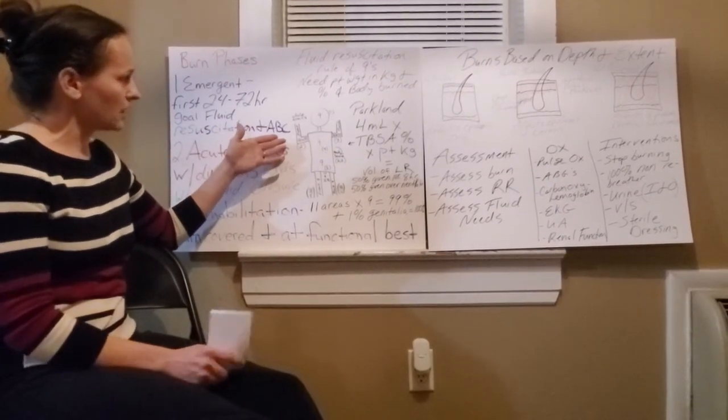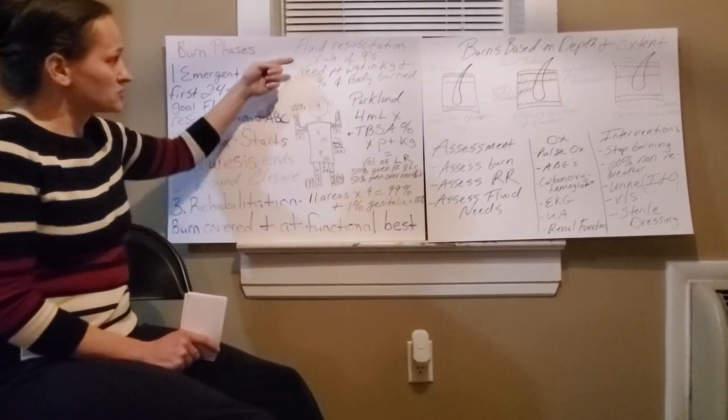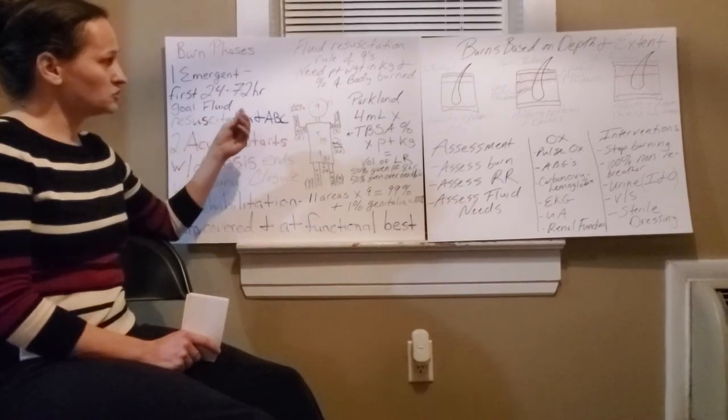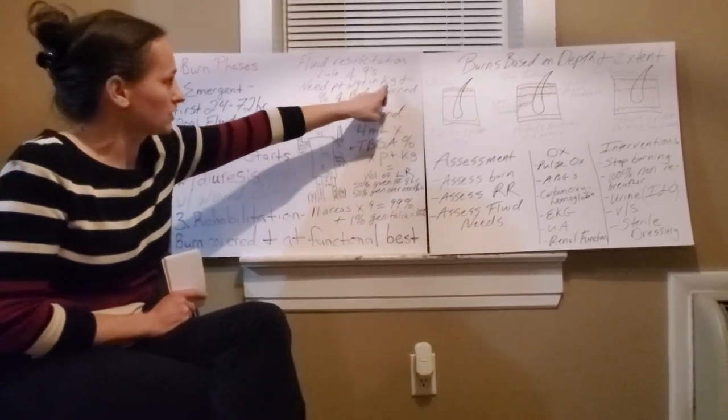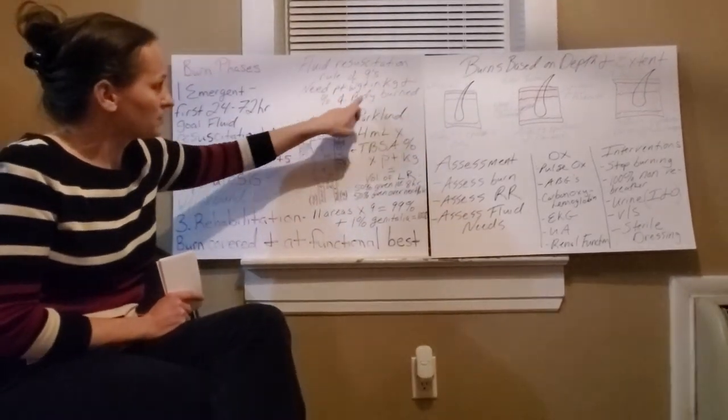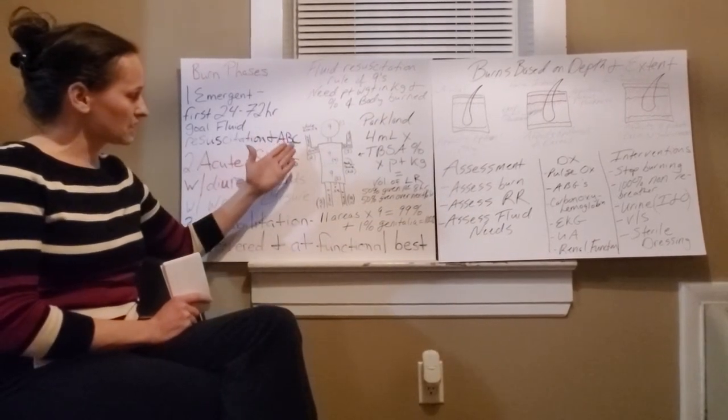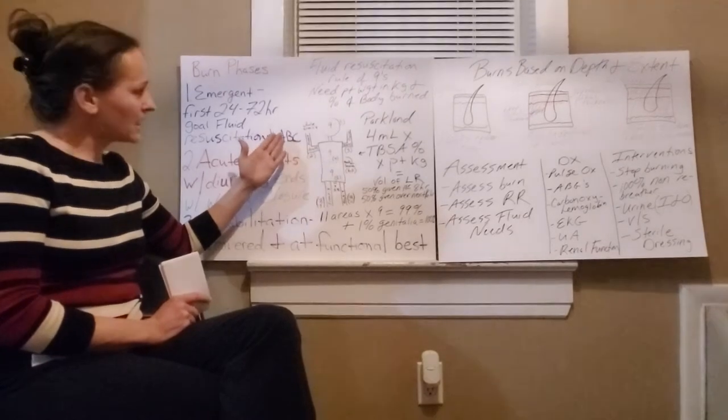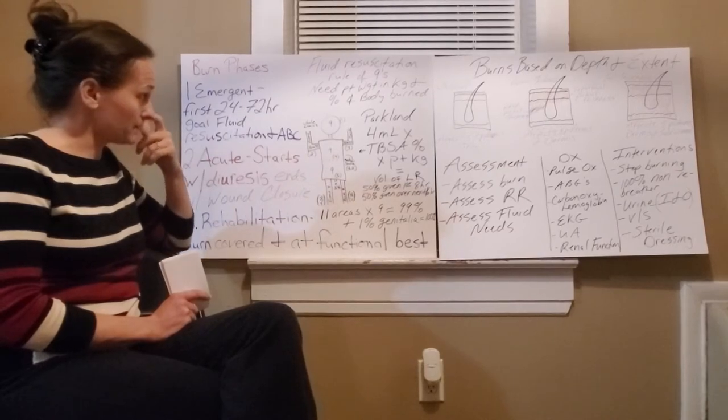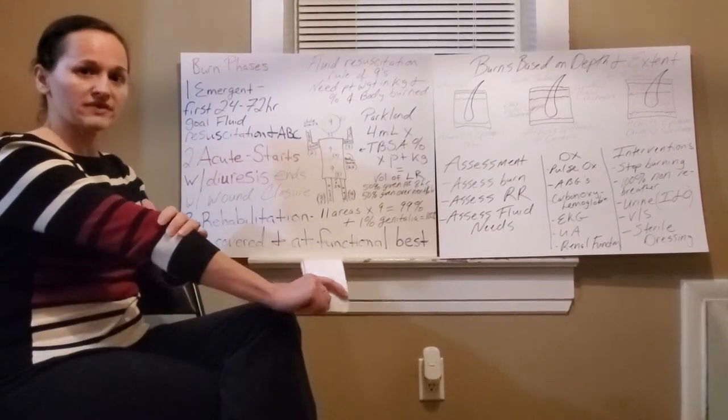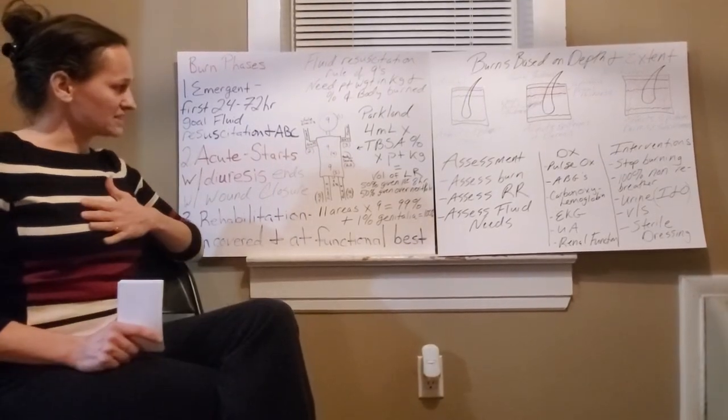Over here is a description of a fluid resuscitation model. They use the rule of nines, and to do the fluid resuscitation math on it, you will need the patient's weight in kilograms and percent of the body burn. To figure out the percent of the body burn, I drew a little guy here, and the head is nine percent. The arms, the front of the arms are 4.5, the back of the arm is 4.5, that equals nine. The upper layer of the chest is nine.